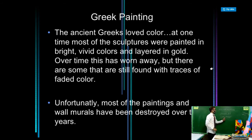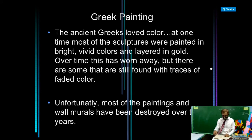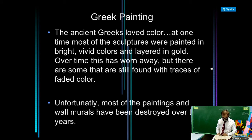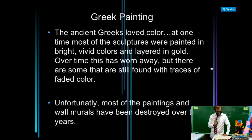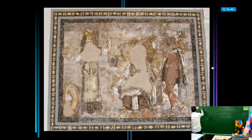The ancient Greeks loved color. At one time, most sculptures were painted in bright and vivid colors and layered in gold. Over time this has worn away, though some still show traces of faded color. Unfortunately, most paintings and wall murals have been destroyed over the years.